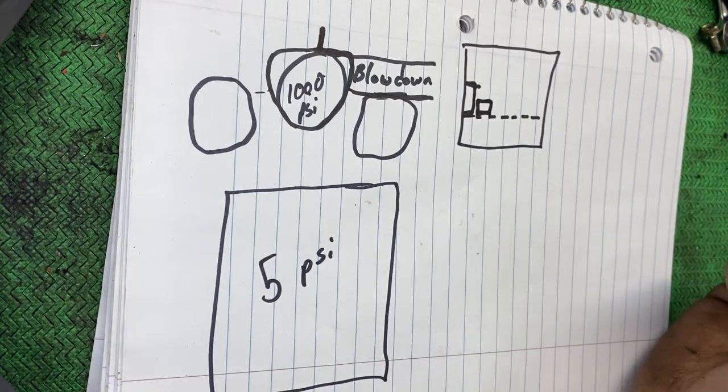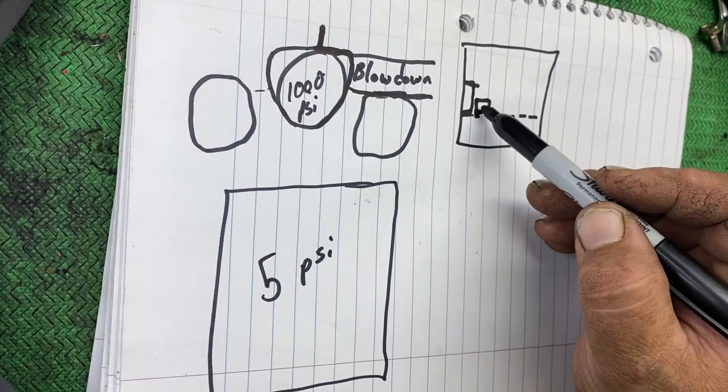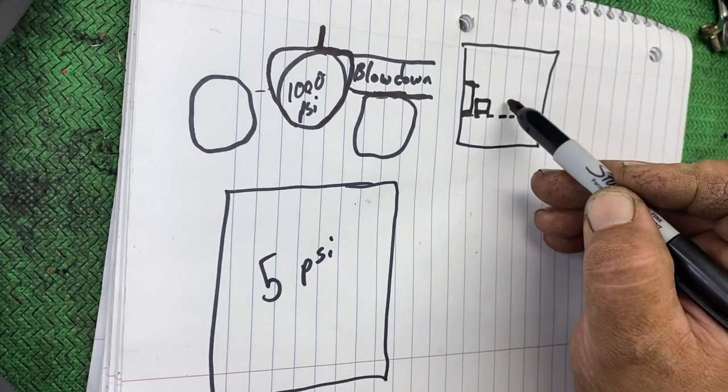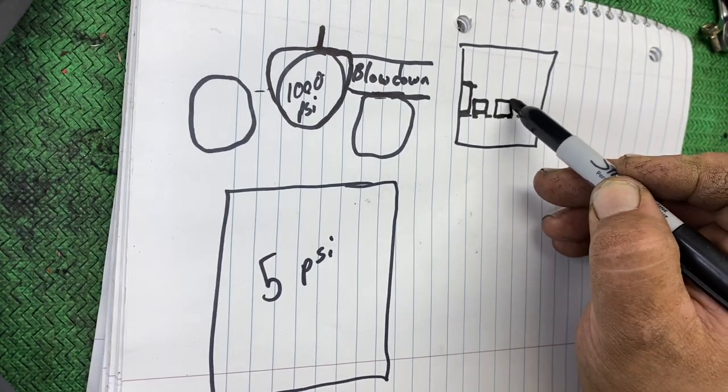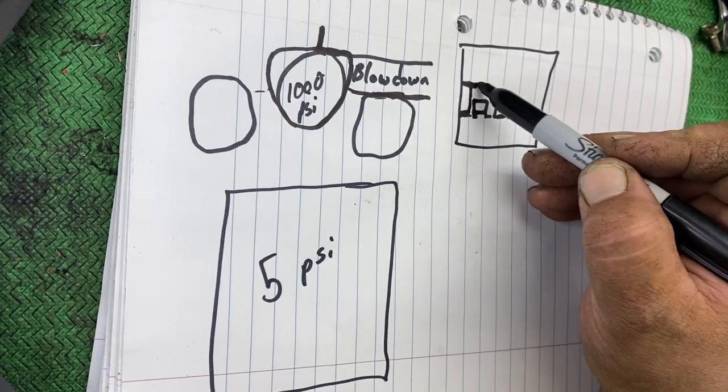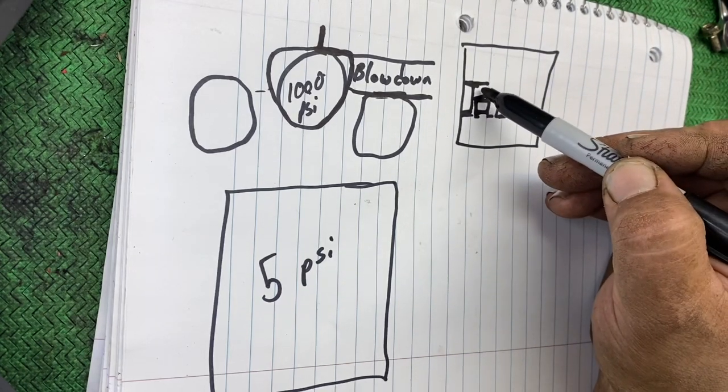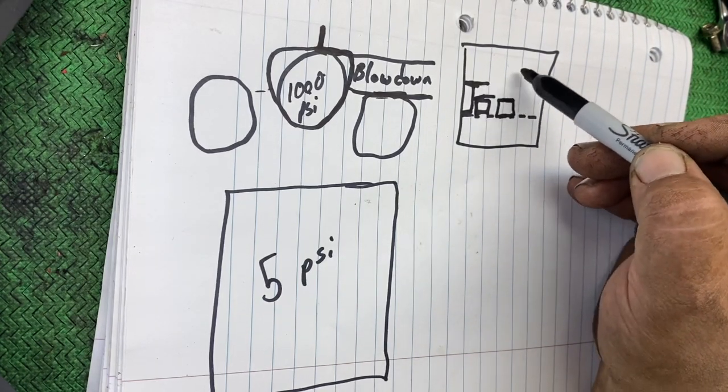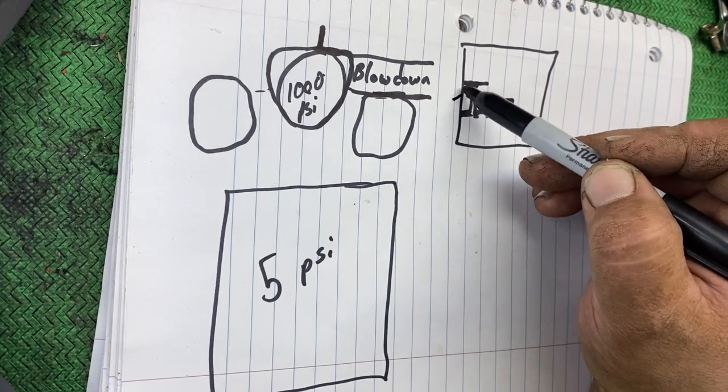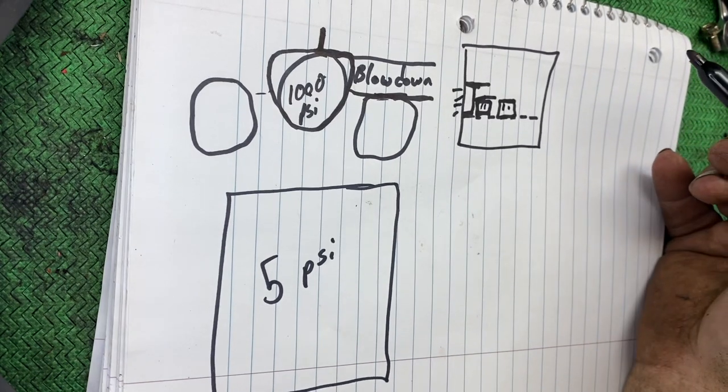This is bottom dead center. Your transfers should be flowing at the same time your exhaust is open. Let me draw two of them here just to help. Now in this time period, your blow down time period, hopefully you're achieving, hopefully you're getting enough exhaust gases out your exhaust port here to allow your transfers to flow immediately.